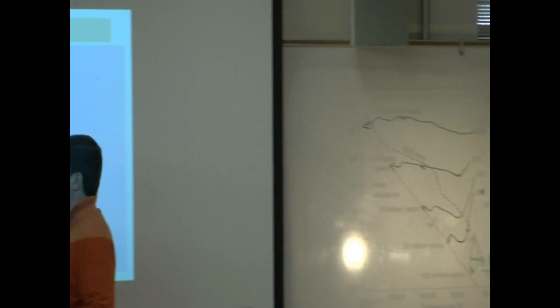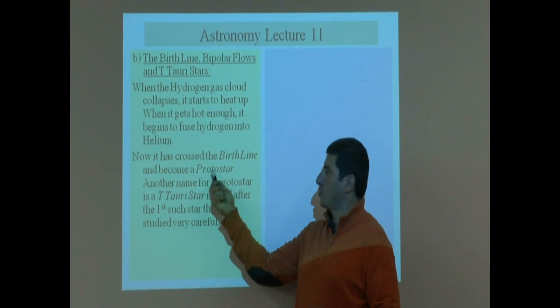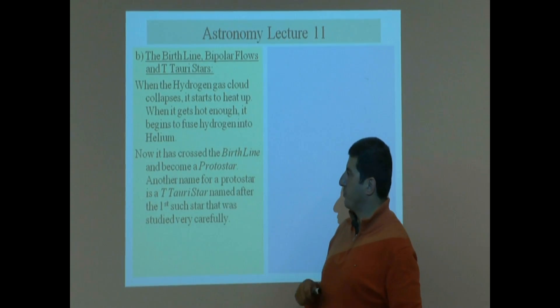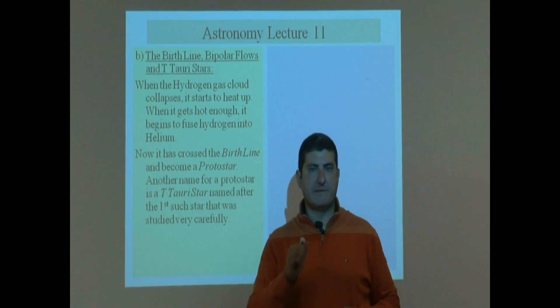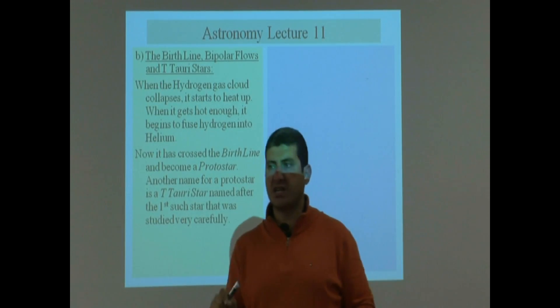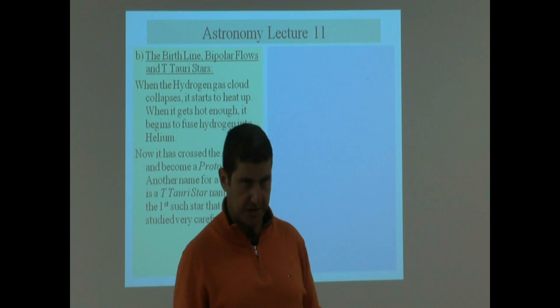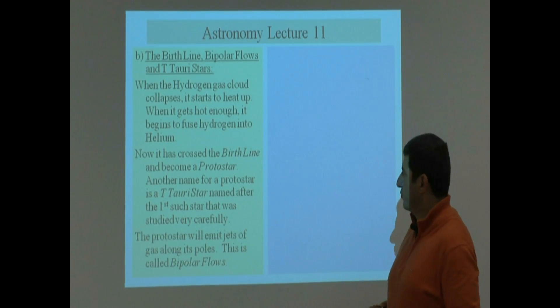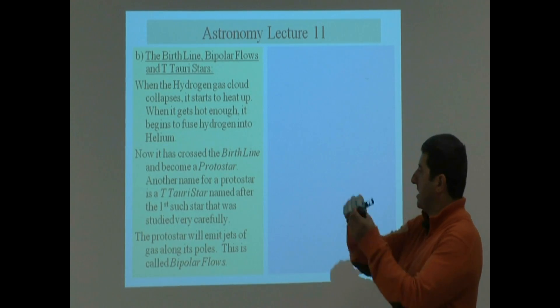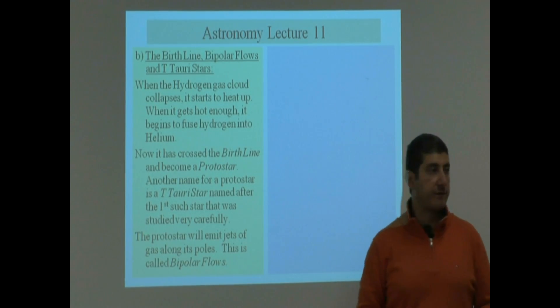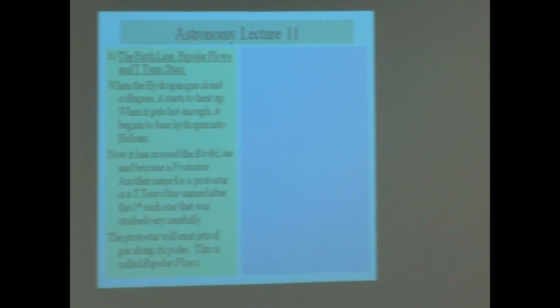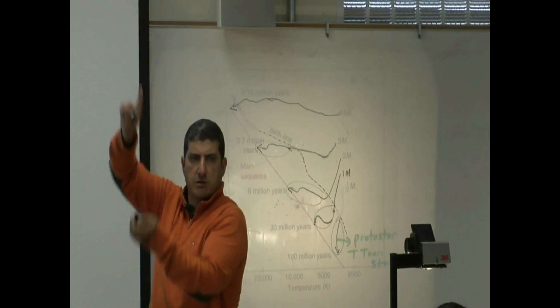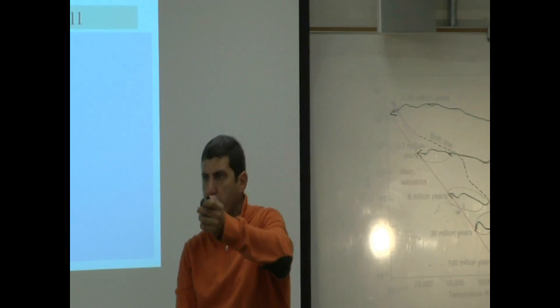So, once it crosses the birth line, it is called the protostar. It's about to become a star. Another name for the protostar is a T-Tauri star. Because the first protostar that was studied very carefully was in the constellation Taurus. So they called protostars T-Tauri stars. The protostar will emit jets of gas along its poles. This is called bipolar flows. So during this stage, the protostar stage, it's emitting that energy that I showed you earlier. One this way, one this way.